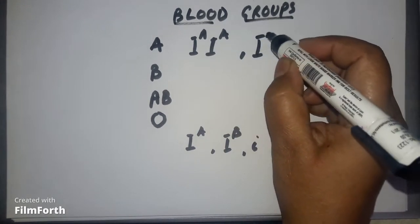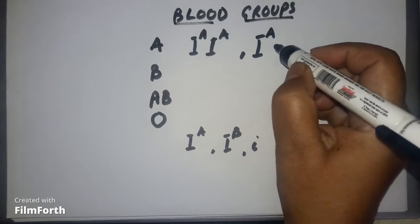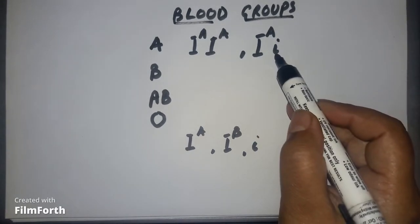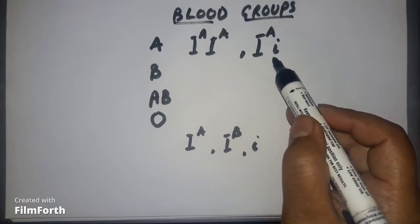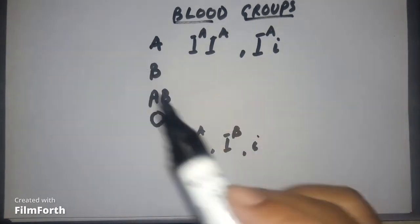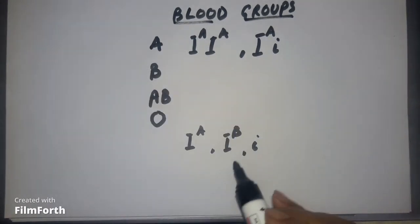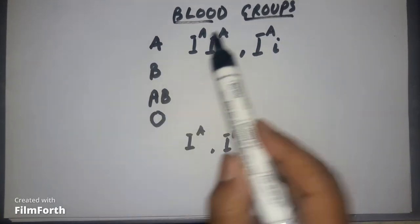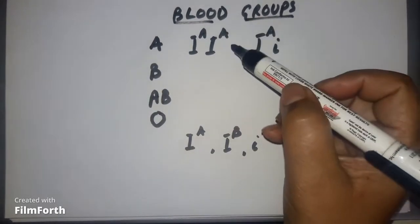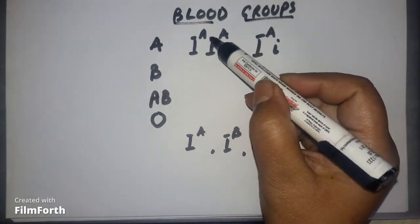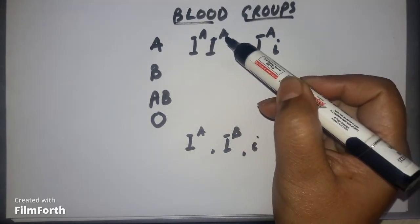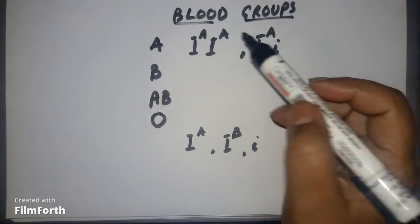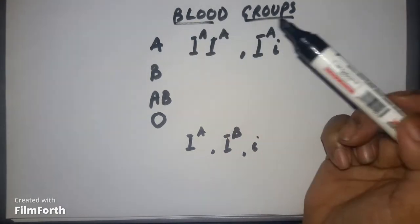Another combination possible is either one gene is of one type and the other is another type. This allelic combination also gives A type of blood group, because A blood group people have a gene which produces a kind of protein — say A protein. So this gene controls that protein.